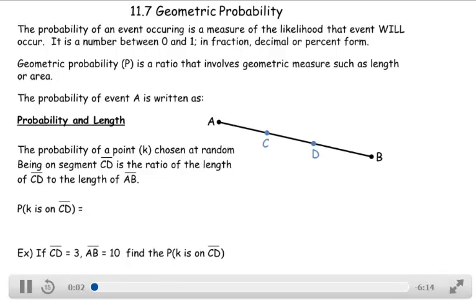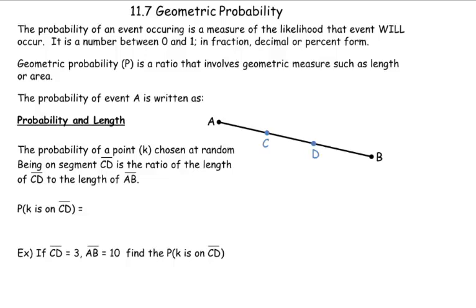Okay everyone, our next section, 11.7, is Geometric Probability. And when we talk about probability, the probability of an event occurring is a measure of the likelihood that that event will occur. It's a number between 0 and 1, and we usually write it in fraction form, decimal, or percent. And for us right now, we're gonna focus on writing in decimal form.